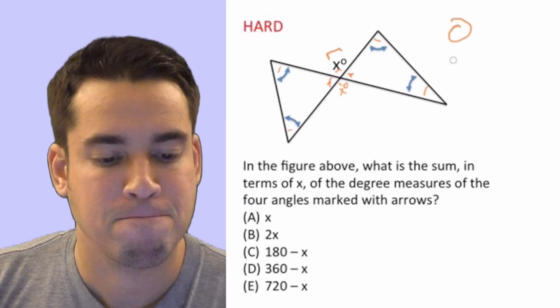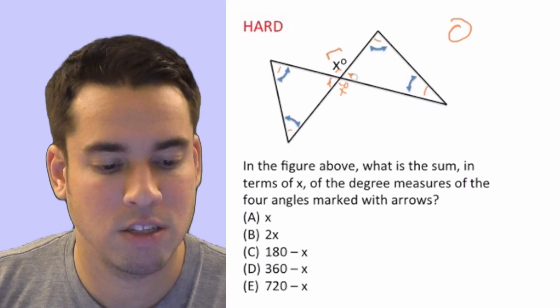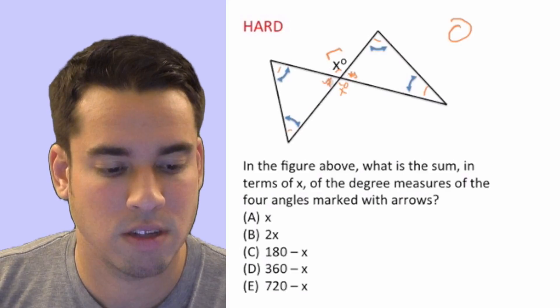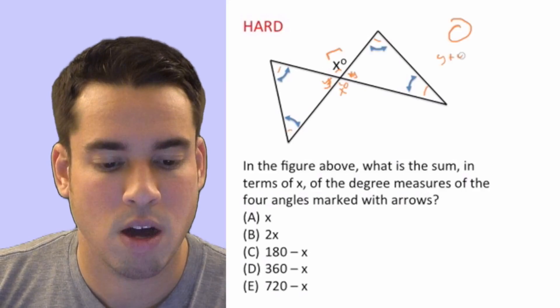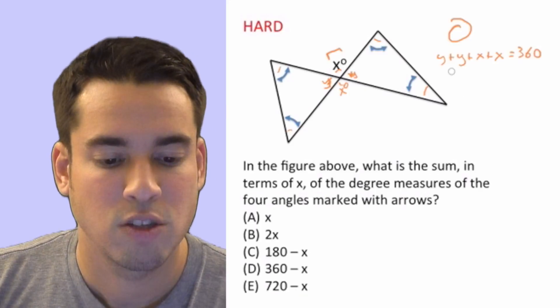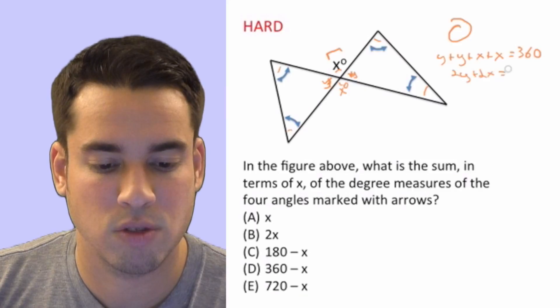Let's put a variable in for a second. Let's say they're y. We're just going to call them y for the time being. So if you add y plus y plus x plus x, they're all going to equal 360. Now let's simplify it more. We got 2y plus 2x equals 360.